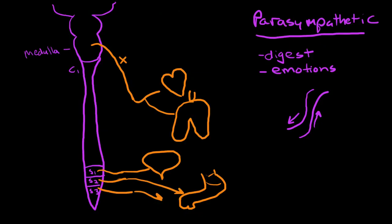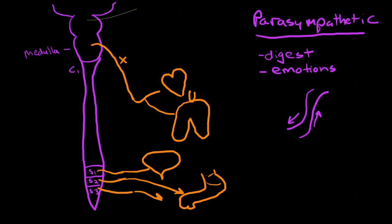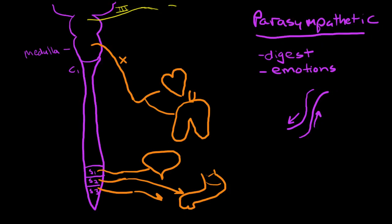The parasympathetic nervous system is also active in other cranial nerves. Cranial nerve number 3 is the oculomotor nerve, and this controls pupillary constriction and dilation.